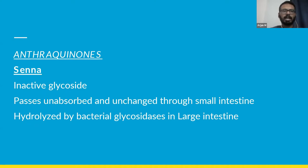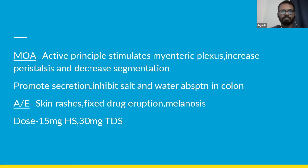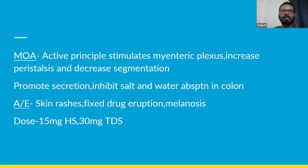Senna is an anthraquinone — an inactive glycoside that passes unchanged through the small intestine and is hydrolyzed by bacterial glycosidases in the large intestine to become activated. Its active principle stimulates the myenteric plexus, increases peristalsis, and decreases segmentation. Another mechanism is that it promotes secretions and inhibits salt and water absorption in the colon. Adverse effects include skin rashes, fixed drug eruption, and melanosis coli. The dosage of senna starts at 7.5 mg, which can be further increased to 15 mg twice daily and then to 22.5 mg, up to 30 mg twice a day.